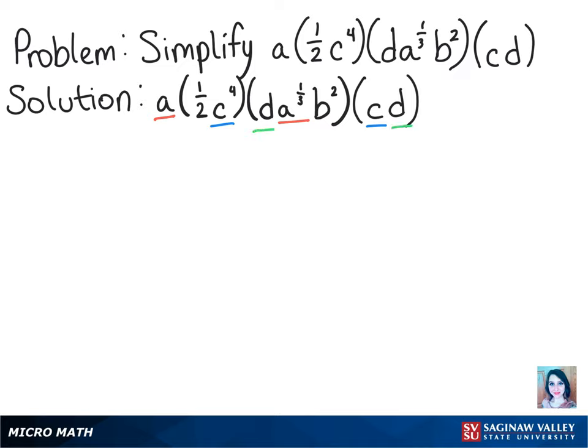So we want to add their exponents when we're multiplying them. So let's pull out the coefficient 1 half first. And then we can clean this up a little bit by putting it in alphabetical order as well.